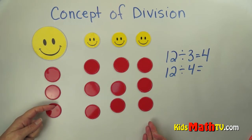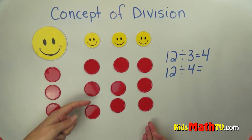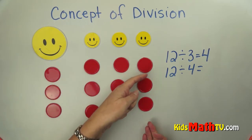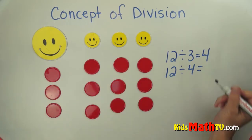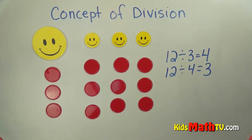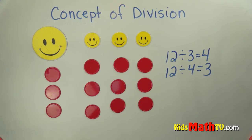So we still have the 12 candies but this time we've divided it into 4 groups. How many are in each group? We can see 1, 2, 3 here; 1, 2, 3; 1, 2, 3; and 1, 2, 3. So 12 divided by 4 is 3. And that's the end of our lesson on the concept of division.